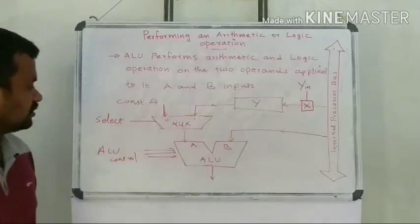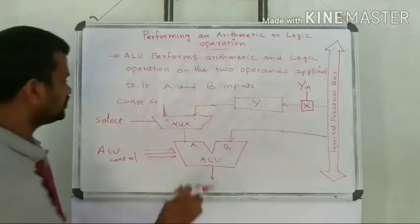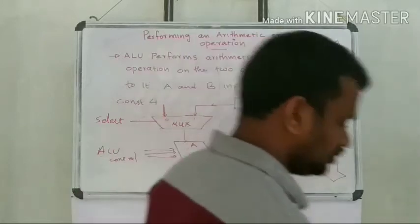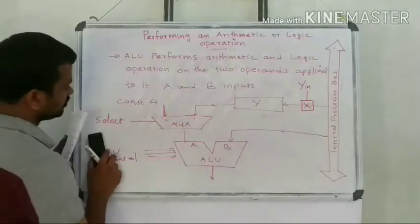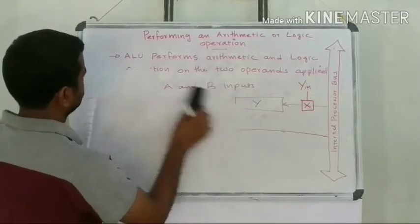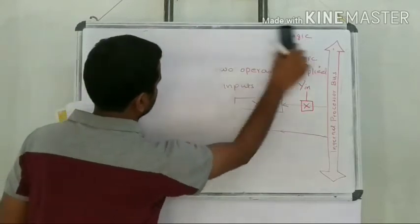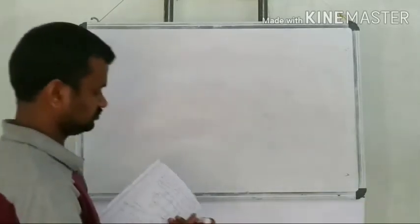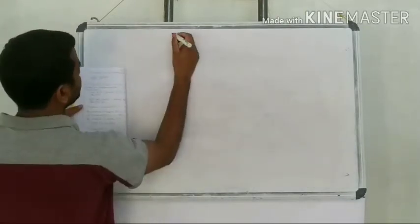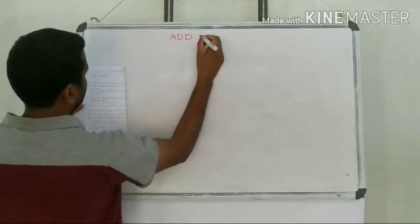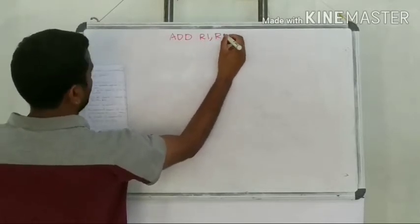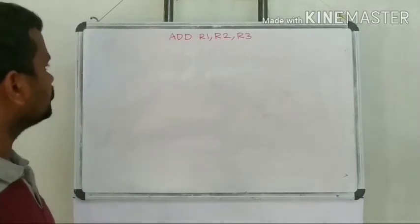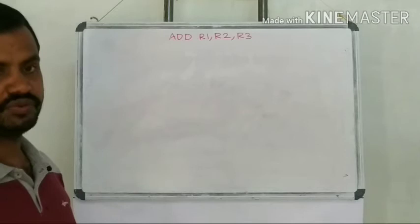Based on the ALU control line, the ALU will perform the corresponding operation on its A and B inputs, and the output will be generated. Now let us consider the execution of an elementary instruction. Consider the operation: ADD R1, R2, R3. We will see how this instruction will be executed using our data path.